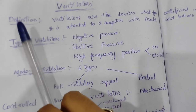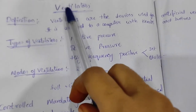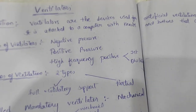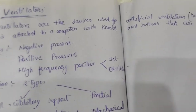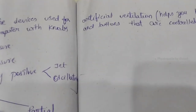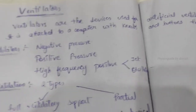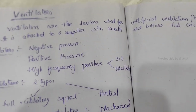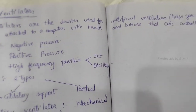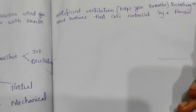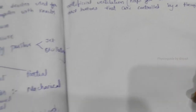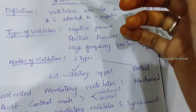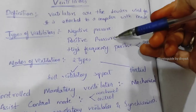Firstly, what is a ventilator? A ventilator is a device used for artificial ventilation that helps in breathing. It is a breathing machine attached to a computer with knobs and buttons that are controlled by a therapist, nurse, or doctor. The types of ventilators are: negative pressure ventilator and positive pressure ventilator.